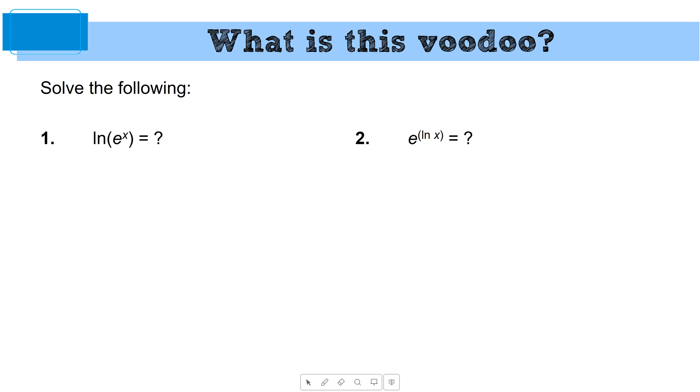All right. So quick review on some pre-calculus stuff. What's the natural log of e to the x? X. Why? Because the natural log is the inverse. Good. Bring the x out in front. X times the natural log of e. Natural log of e is 1. How about this guy? Also just x. E to the natural log of x. They cancel each other out.